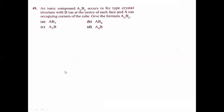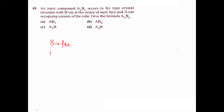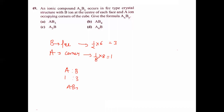An ionic compound AxBy occurs in FCC type crystal. B ions are at the center of each face, A ions are occupying the corners. B at face centers: 1/2 × 6 = 3. A at corners: 1/8 × 8 = 1. Ratio A:B = 1:3. So the formula is AB₃, which is option A.